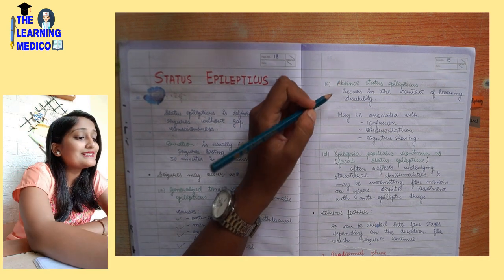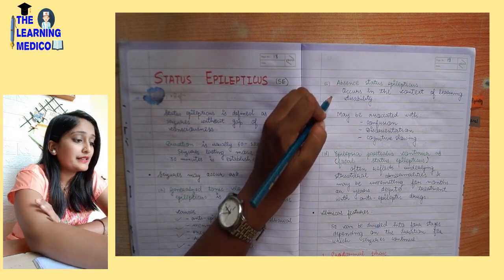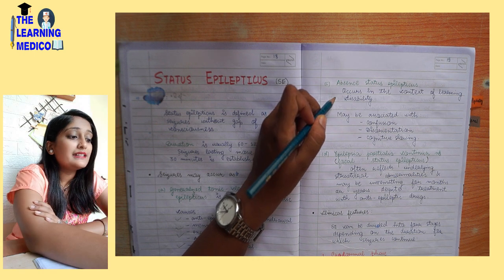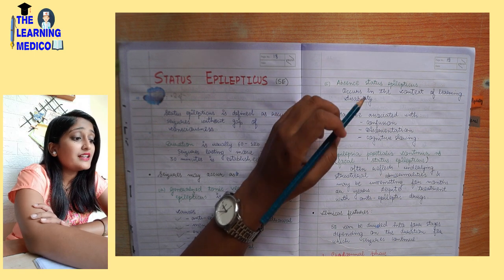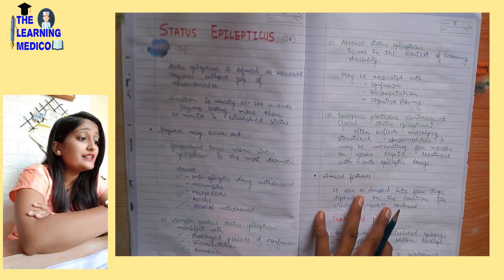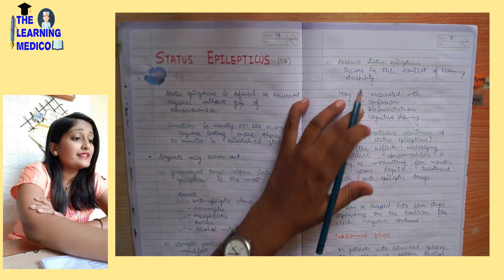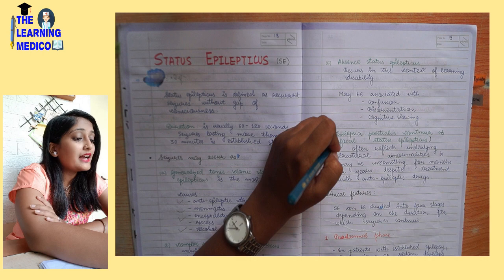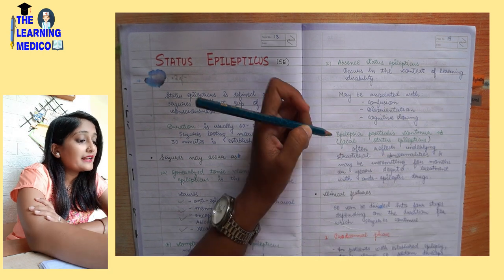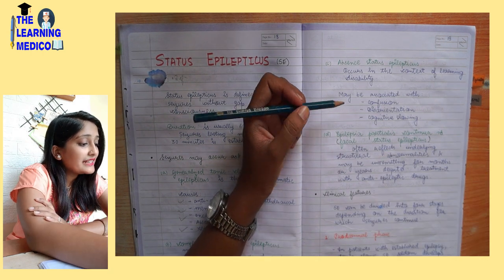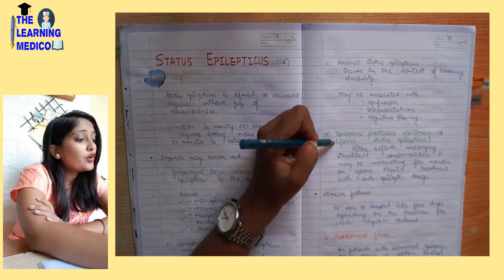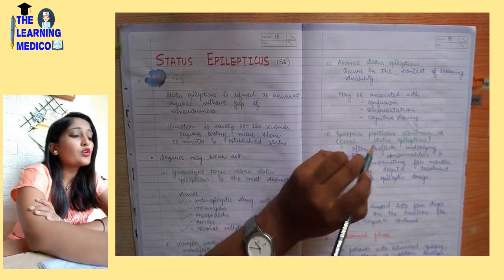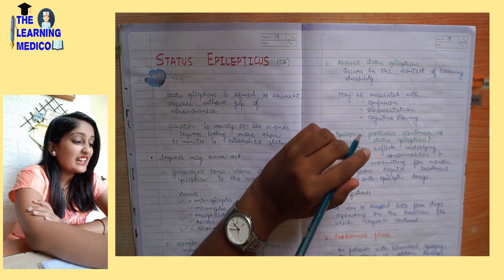Absence status epilepticus occurs in the context of learning disability and may be associated with confusion, disorientation, and cognitive slowing. Then, epilepsia partialis continua is focal status epilepticus — we can also call it focal status epilepticus.